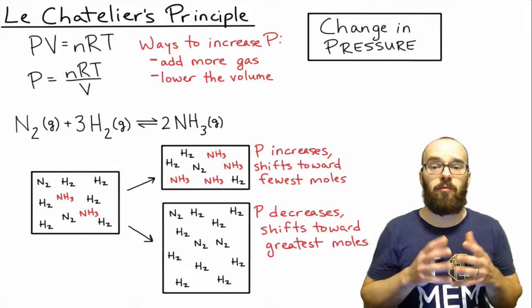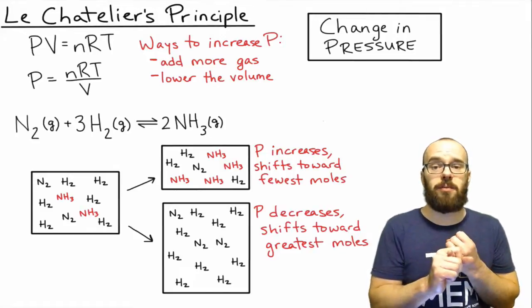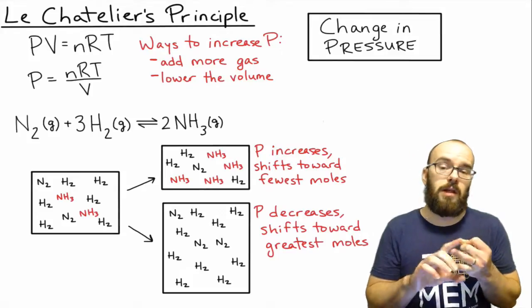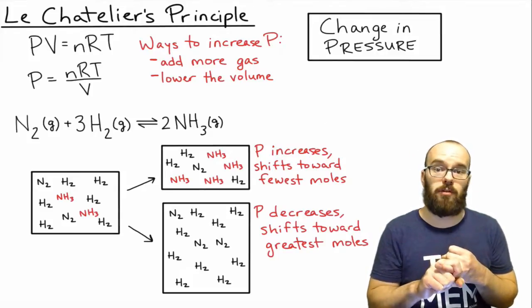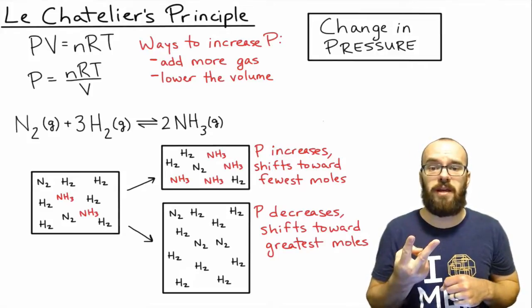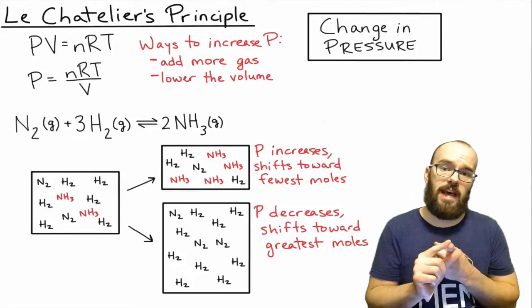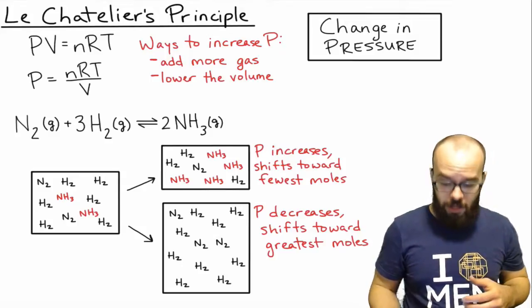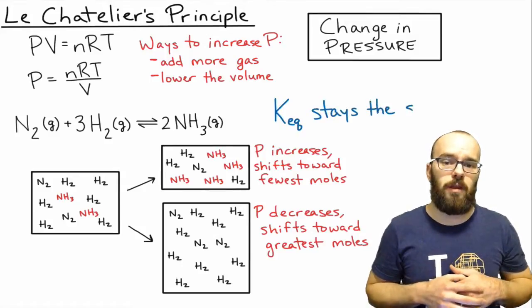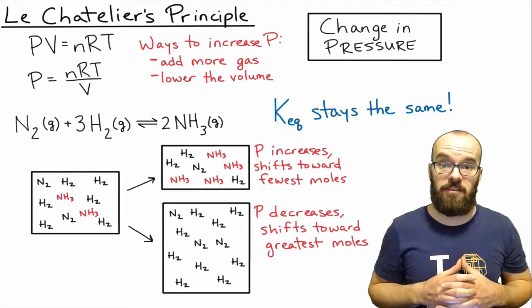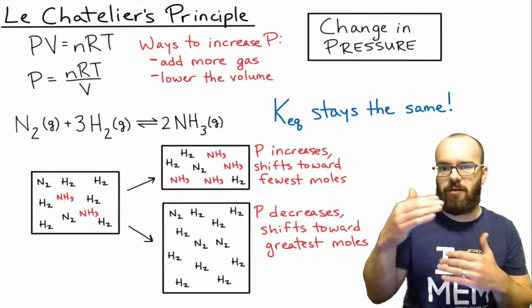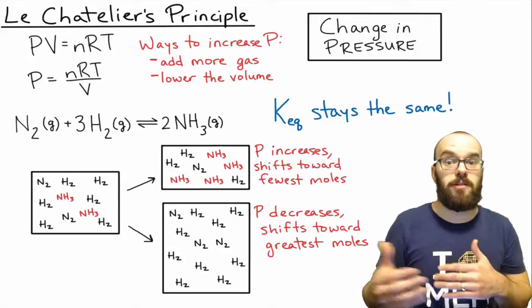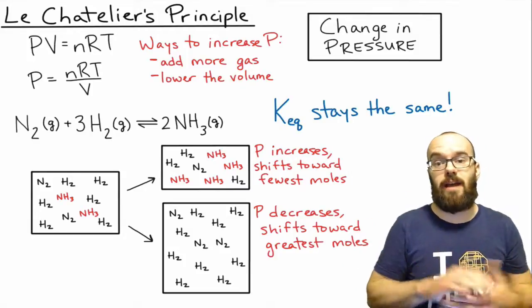The big takeaway here with pressure: if you increase the pressure, it's going to shift it toward the fewest number of moles. If you decrease the pressure, it shifts it toward the greatest number of moles. There are two ways to change the pressure — one is to add more of a gas, one is to change the volume. Also, just like with concentrations, anytime you change the pressure, that K value is actually going to stay the same. The ratio of products over reactants will initially change, but they're going to shift in order to bring the ratio back to that K value.